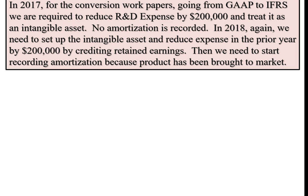Now, what happens on our conversion work papers? In 2017, for the conversion work papers going from GAAP to the International Standard, we are required to reduce our R&D expense by $200,000 and treat it as an intangible asset. We do not do any amortization.